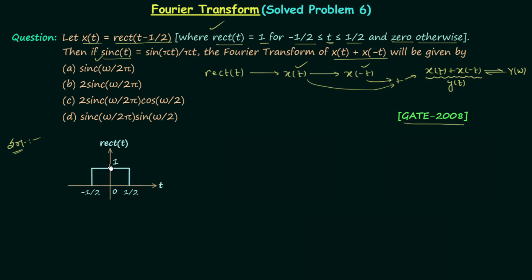You can see the waveform of rect(t) here. For rect(t), the amplitude A = 1 and τ = 1, so the signal has amplitude 1 over a duration of 1 second. On this signal we will perform a time-shifting operation — a right shift by 1/2 — because x(t) = rect(t − 1/2).